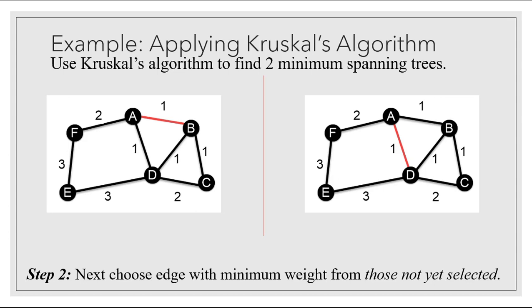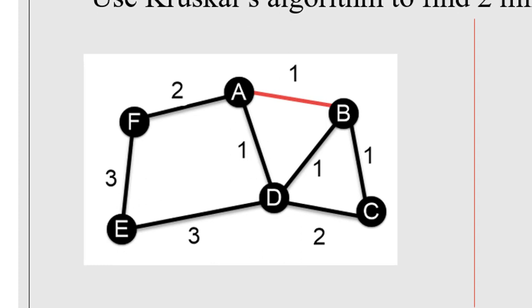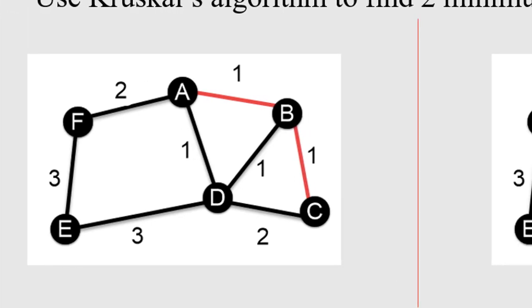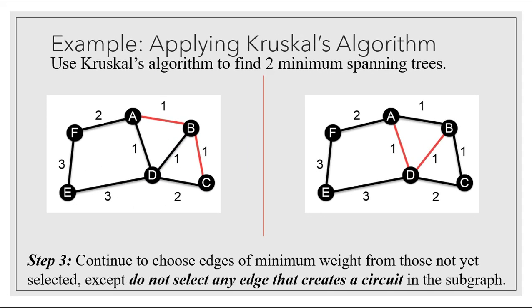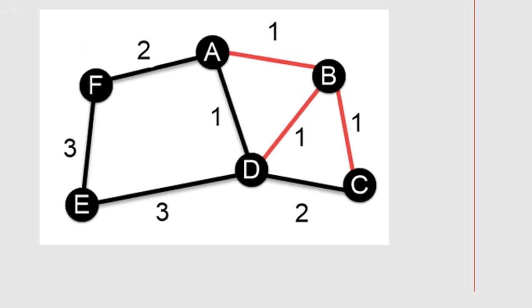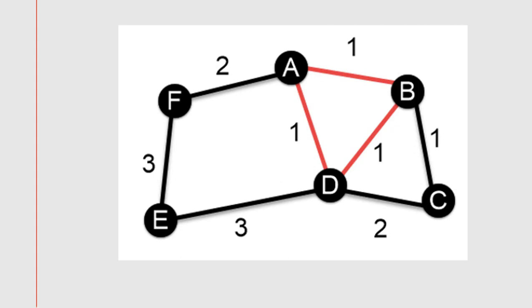Moving to step two, we choose the edge with minimum weight from those not yet selected. On the left, I still need to select an edge of weight one, so I select BC. On the right, one is still the least remaining weight, so I select BT. Step three: continue choosing edges of minimum weight, but do not select any edge that creates a circuit. On the left I selected BD. On the right, I thought about selecting AB but that would create a circuit, so instead I selected BC.